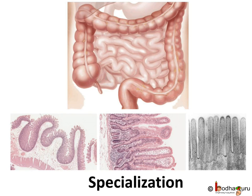In some cells, the plasma membrane gets modified to absorb or secrete certain materials. For example, in the small intestine, villi absorb nutrients. Intestinal villi are small finger-like projections that protrude from the walls of the small intestine.